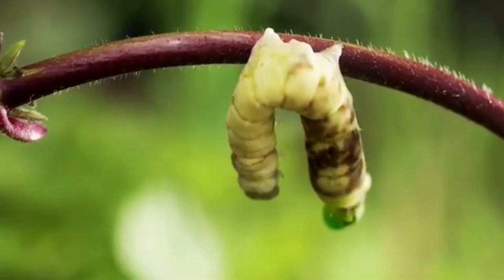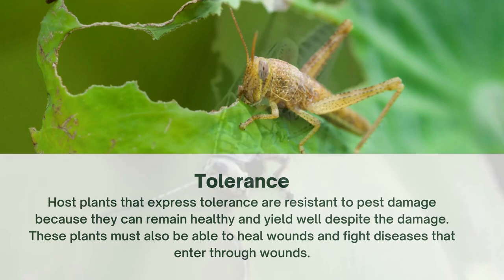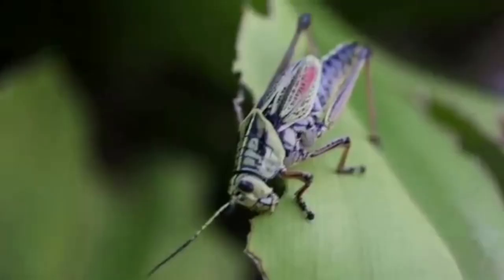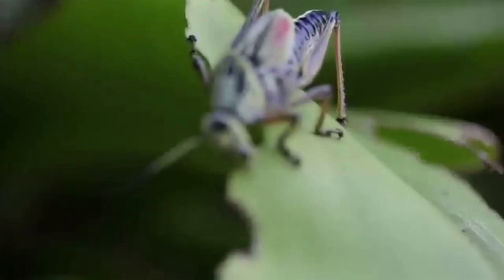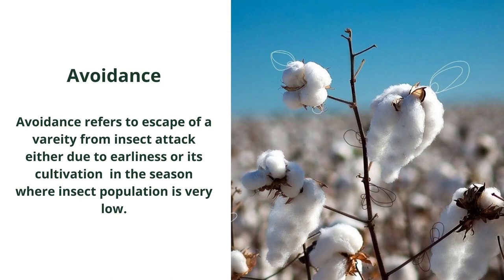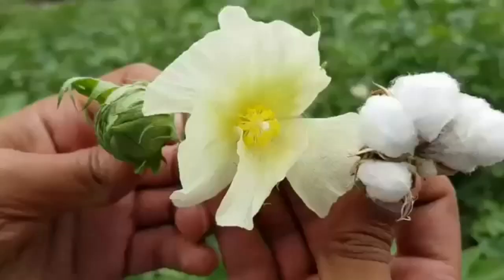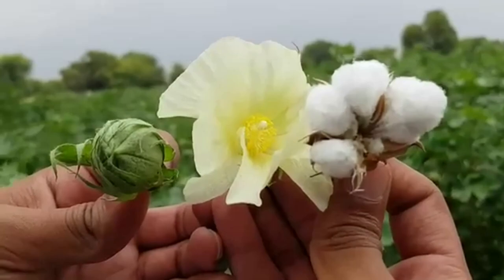Tolerance: host plants that express tolerance are resistant to pest damage because they can remain healthy and yield well despite the damage. These plants must also be able to heal wounds and fight diseases that enter through wounds. Avoidance refers to the escape of a variety from insect attack, either due to earliness of cultivation in the season when the insect population is very low. Plants with avoidance tend to have early maturity compared to other varieties.